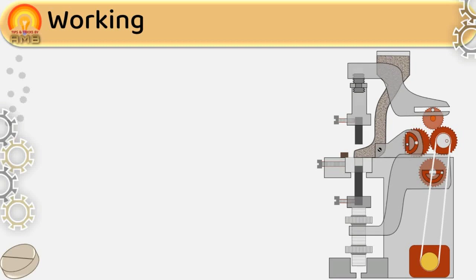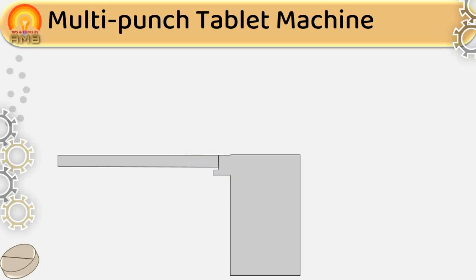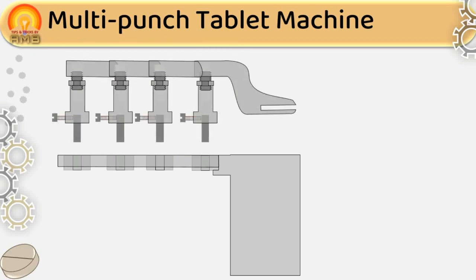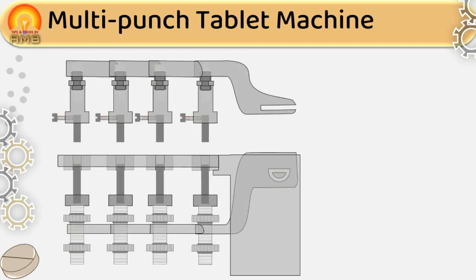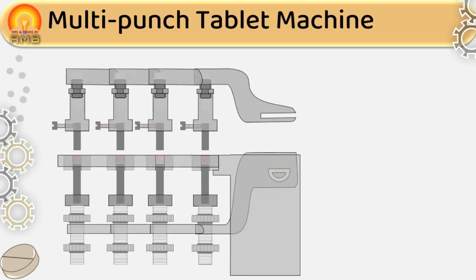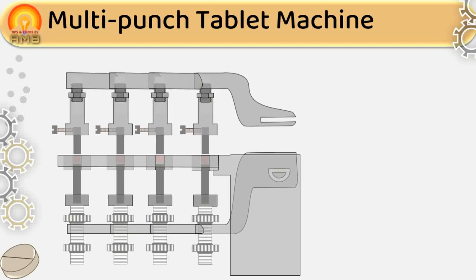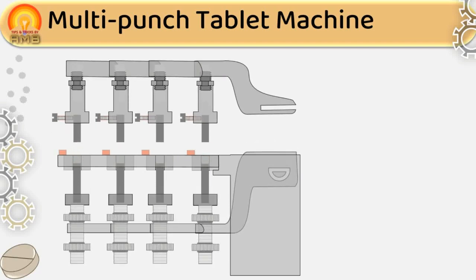Now let's discuss the multi-punch tablet machine. It has 2 to 12 dies on a big platform, and also has the same number of upper and lower punches as the number of dies present. The hopper shoe is somewhat bigger, able to fill granules in all the dies on the platform. Except these changes, the multi-punch tablet machine is similar in construction and working to the single punch tablet machine. In one stroke or one cycle, the number of tablets formed equals the number of dies present in the machine.